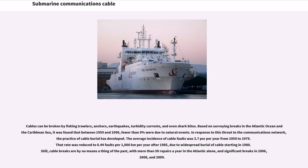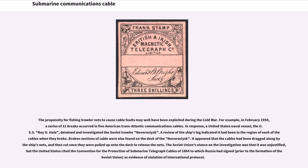Still, cable breaks are by no means a thing of the past, with more than 50 repairs a year in the Atlantic alone, and significant breaks in 2006, 2008, and 2009. The propensity for fishing trawler nets to cause cable faults may well have been exploited during the Cold War. For example, in February 1959, a series of 12 breaks occurred in five American transatlantic communications cables. In response, a United States naval vessel, the USS Roy O'Hale, detained and investigated the Soviet trawler Novorossiysk. A review of the ship's log indicated it had been in the region of each of the cables when they broke, and broken sections of cable were found on the deck. It appeared that the cables had been dragged along by the ship's nets, and then cut once they were pulled up onto the deck to release the nets.